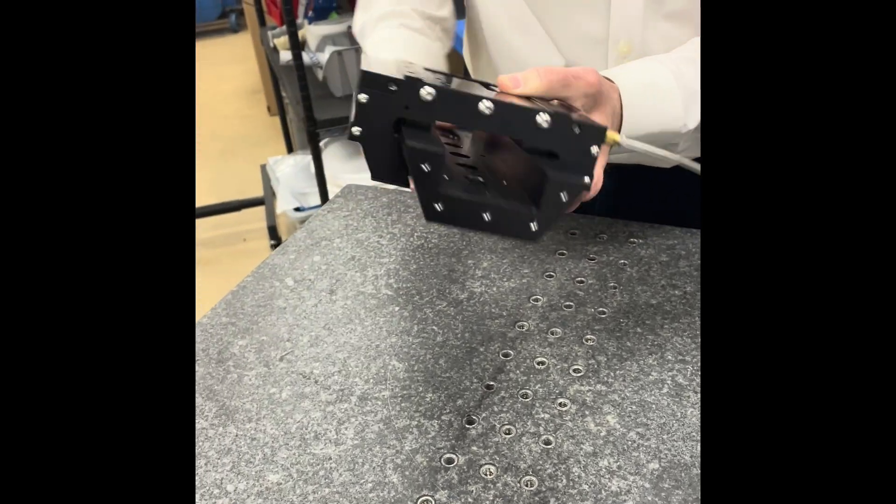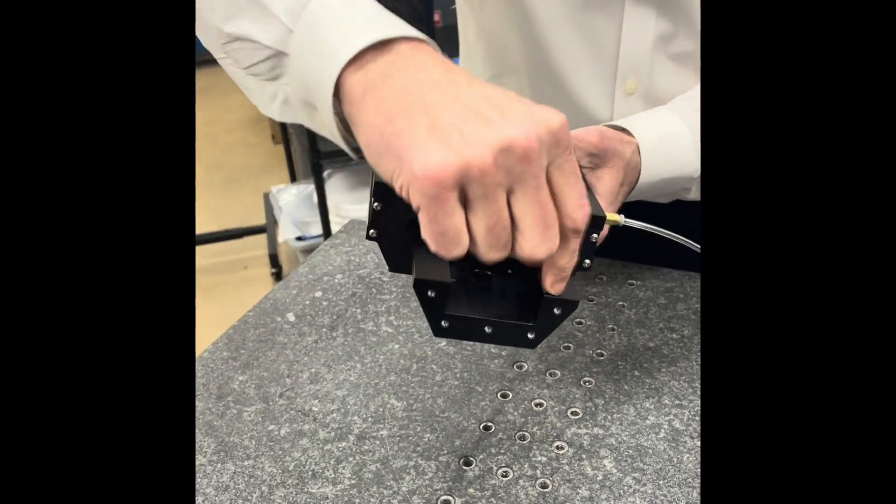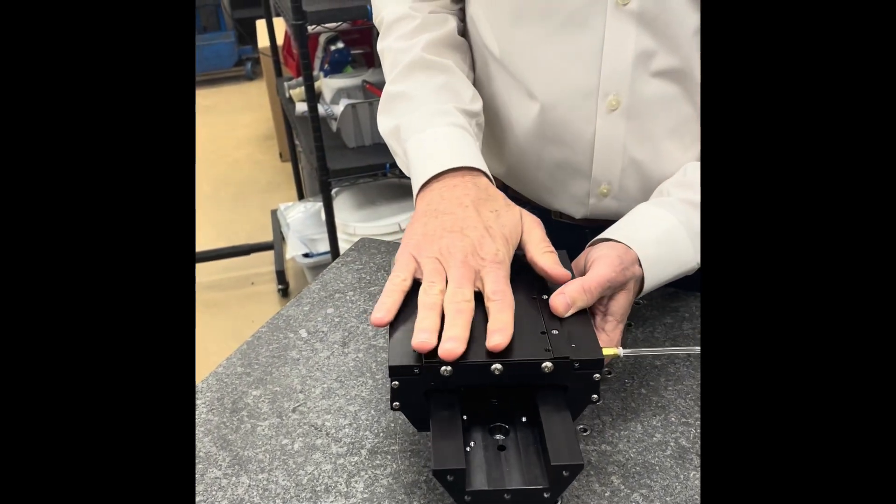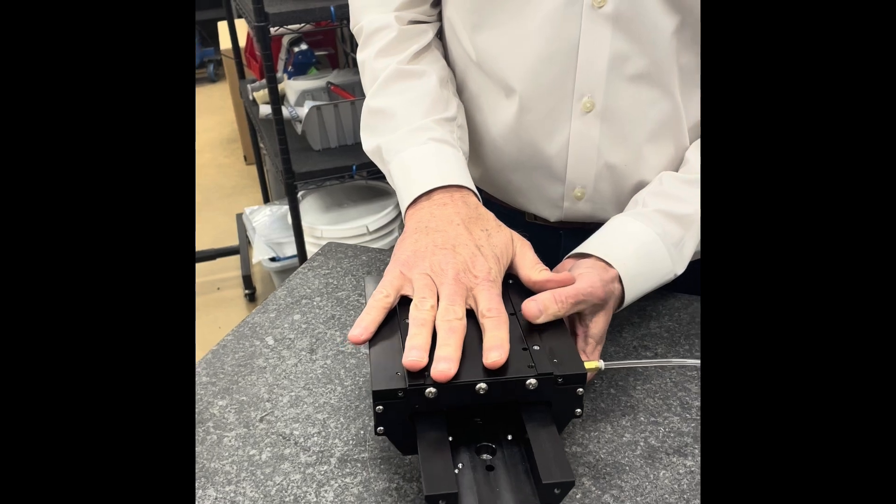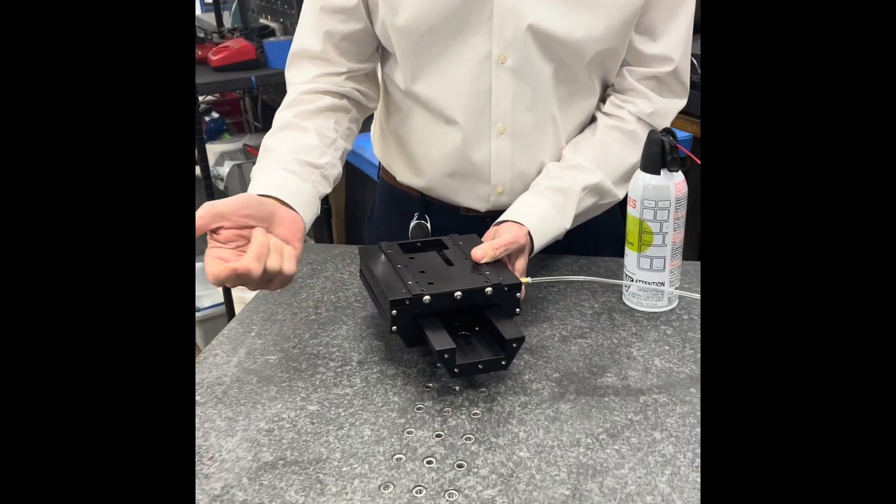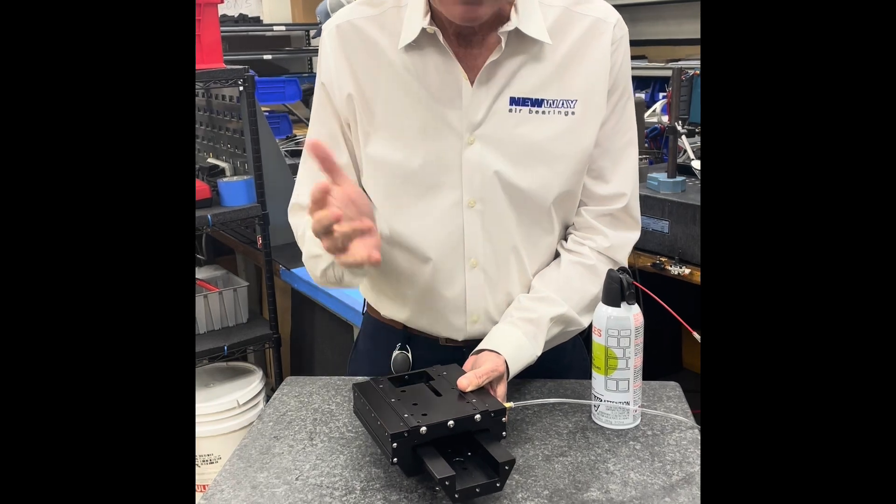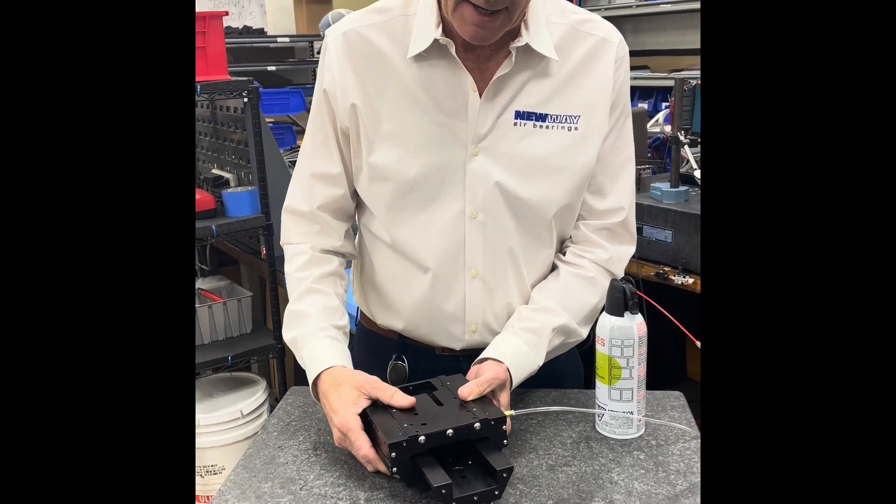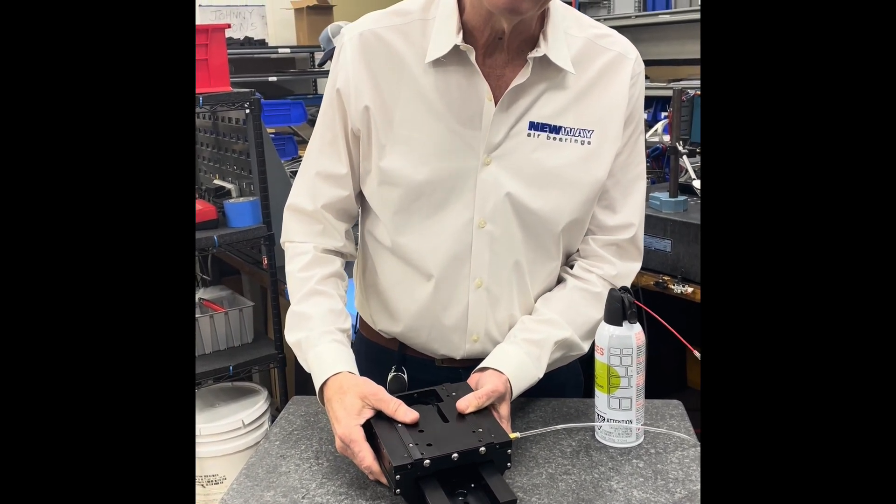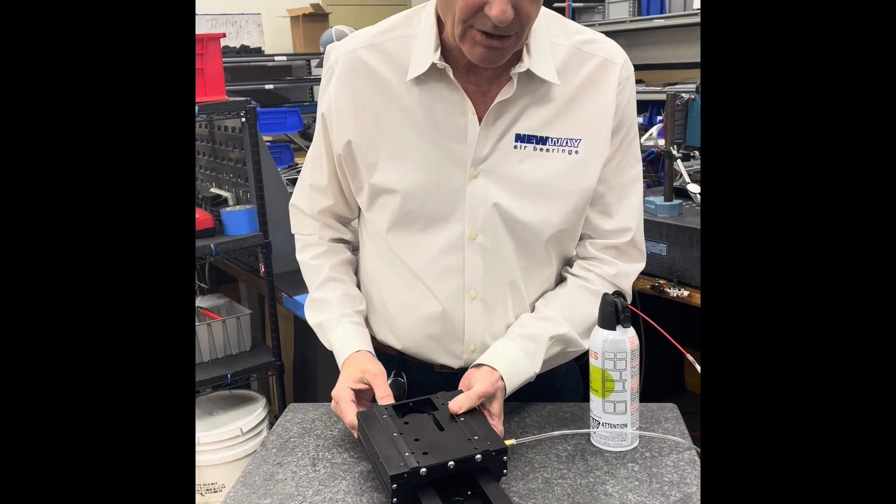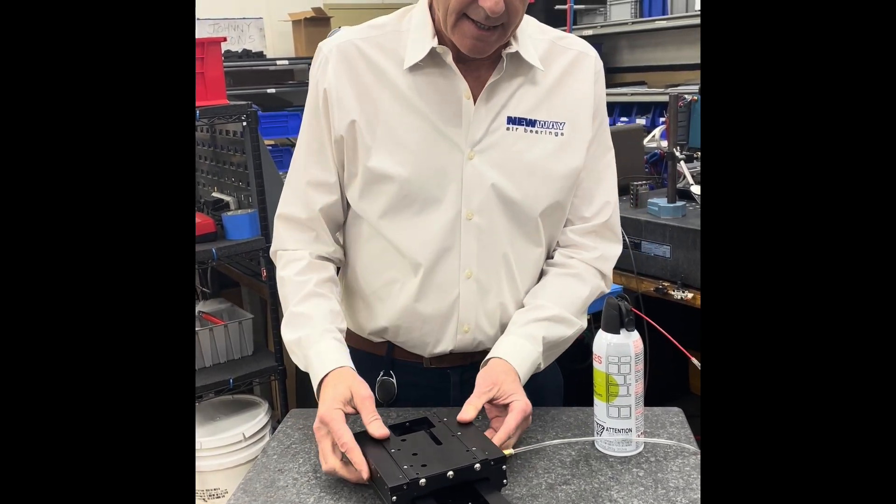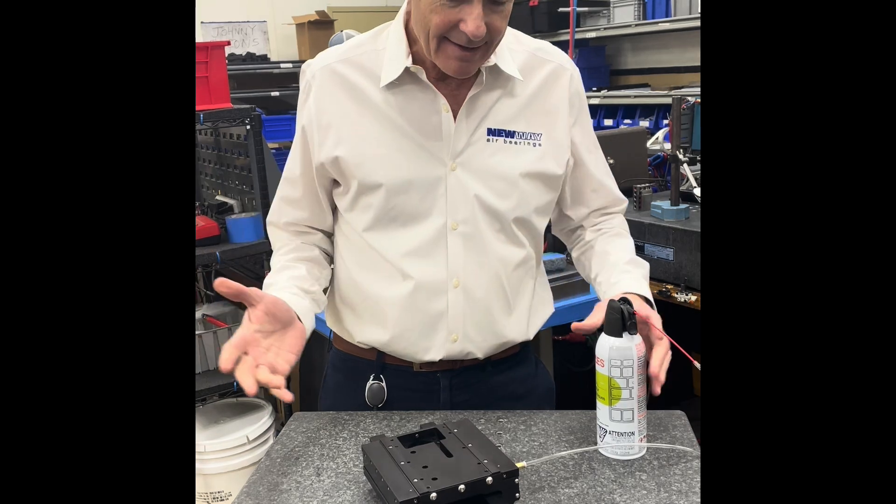We vacuum them onto the guideway, hold the housing in a perfect relationship while we inject epoxy using nozzles between the back of the bearing and the inside of the housing. So there's no ball screws, but we get a perfect fit without having to match grind.